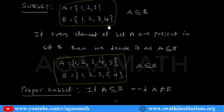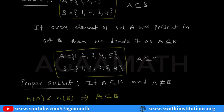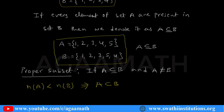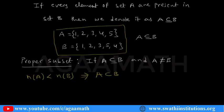So in a subset, the sets may be equal or smaller. But in a proper subset, remember: the number of elements in the first set must be smaller than the second set, and also every element of the first set must be present in the second set. Then only they are said to be a proper subset. This is the little difference between a subset and a proper subset.